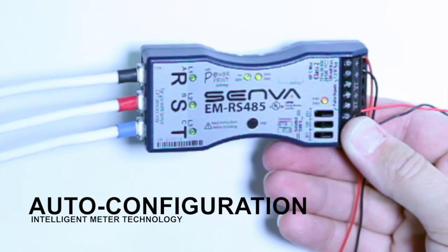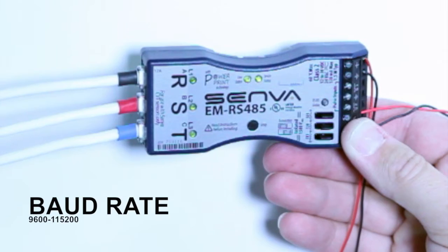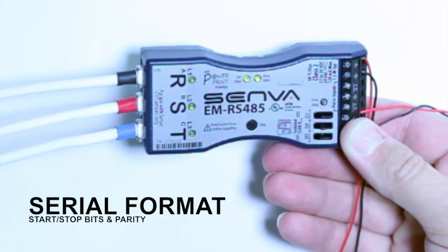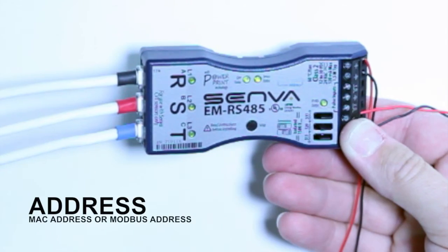Senva's EMRS 45 utilizes intelligent meter technology to self-configure baud rate, serial format, protocol, and address.